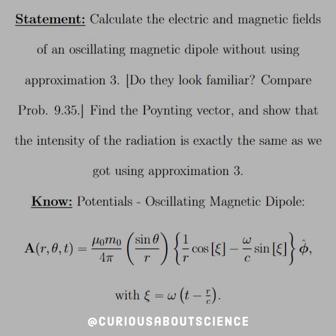Okay, so what we need to know, the potentials of the oscillating magnetic dipole is, well, we have the vector potential. And instead of p-naught, we have a mu-naught and sine theta over r with the 1 over r cosines xi, and then minus omega c sines xi in the phi direction with xi being omega times t minus r over c, which is the retarded time. Again, you just get tired of writing out the omega term.